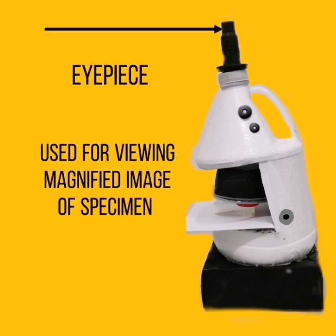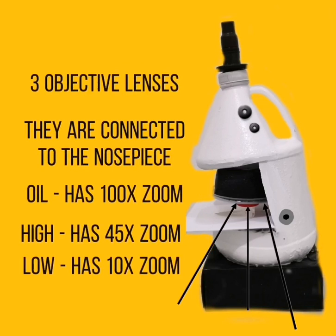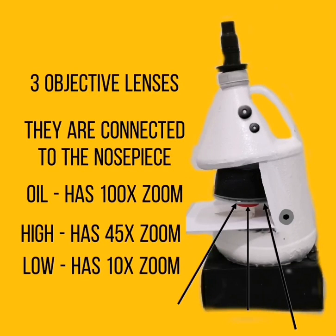Eyepiece — it is used for viewing the magnified image of the specimen. Three objective lenses — they are connected to the nose piece. The oil objective lens has 100 times zoom. The high objective lens has 45 times zoom. The low objective lens has 10 times zoom.